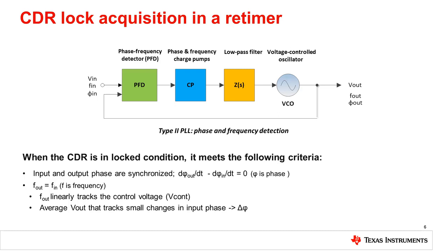Retimer products most commonly implement a type 2 PLL system, where both phase and frequency detection are used. The CDR lock acquisition for type 2 is as follows. The initial loop behavior is controlled by the frequency detector. By comparing Fout and Fn and applying feedback, the frequency delta within the loop is reduced. Once Fout minus Fn is small enough, the phase detector takes over. The key benefits of phase and frequency detection based CDR are a wider frequency pull-in range and a faster CDR lock acquisition time.